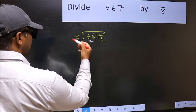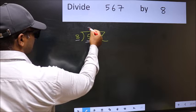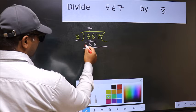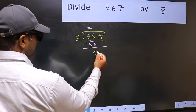When do we get 56 in 8 table? 8 sevens are 56. Now we should subtract: 56 minus 56 equals 0.